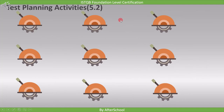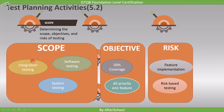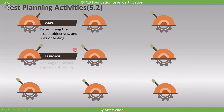The following points are from the fifth chapter but are included here for better understanding. In test planning, we determine the scope, objectives, and risks of testing. We define the roadmap of testing — deciding whether we want to perform integration testing, software testing, system testing, or all of these. For objectives, we may decide to cover 50% of testing or only priority 1 features. For risk, we analyze risks associated with features and decide whether to go for feature-based or risk-based testing.